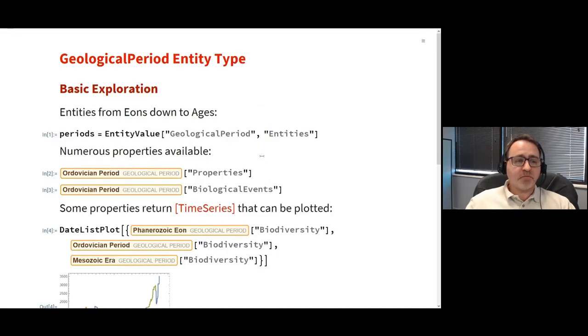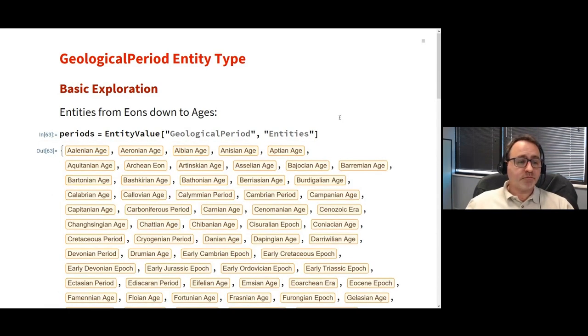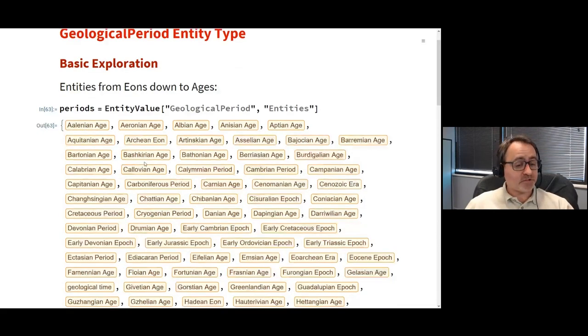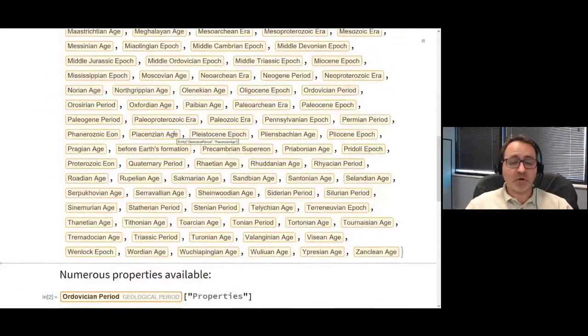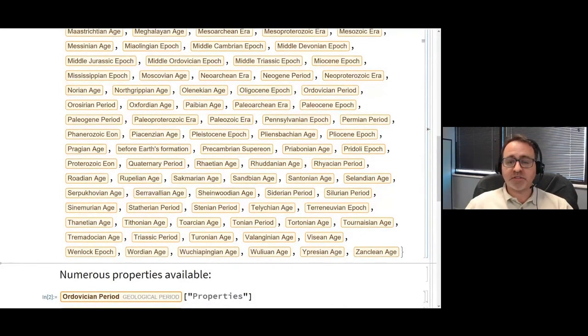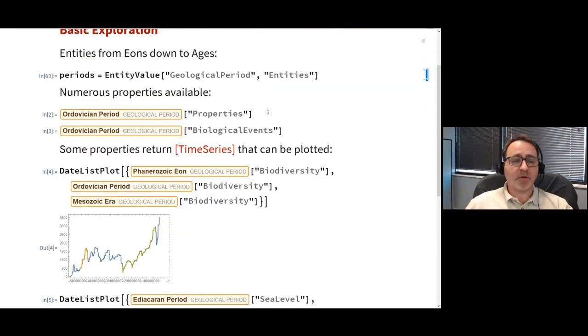We're going to start with some basic entity value stuff. Entity value has been around since version 10, and one of the primary domains we're going to explore is the geological period entity type. You can see quite a few periods within here. These are not just periods, but we have eons, eras, periods, epochs, and ages. As you scroll down, you can see all these entities are hierarchical.